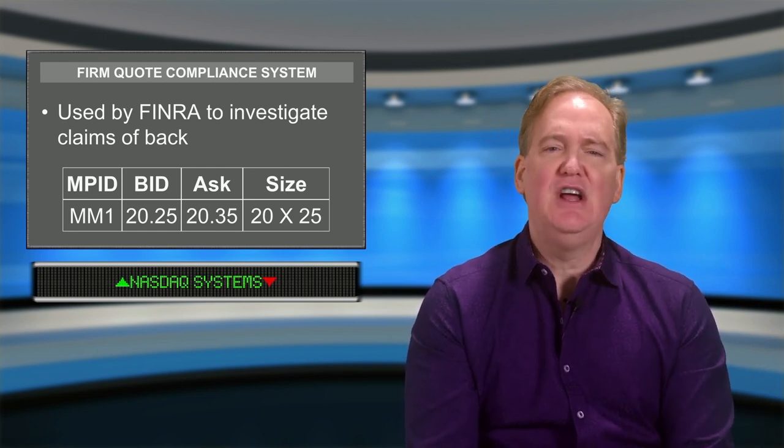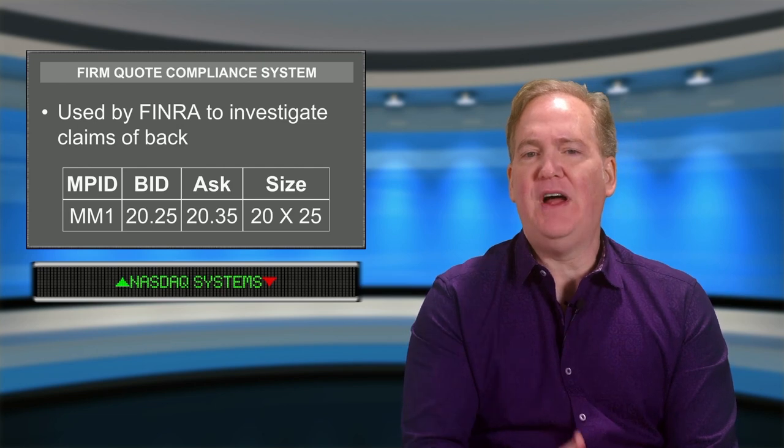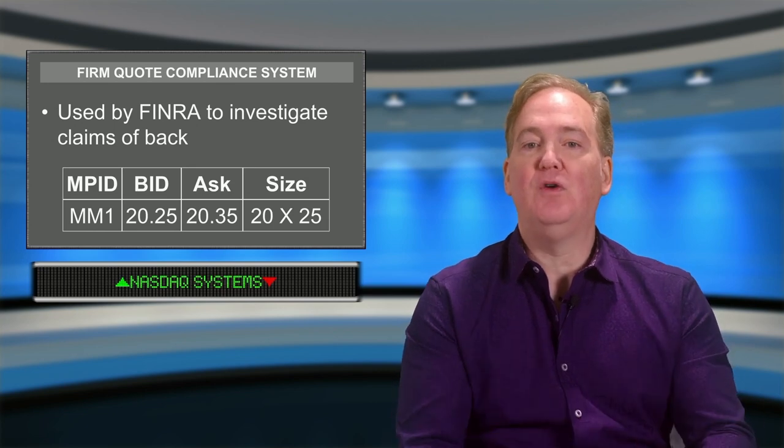Market maker one is looking to buy 2,000 shares at the bid of 20.25 and has 2,500 shares offered at 20.35. If a market maker is displaying prices, they must honor them. So if an order is routed to market maker one to buy 1,000 shares at 20.35 and market maker one fails to honor that quote — simply backs away, updates their quote to maybe 20.40 without filling the customer's order — then the market maker has backed away. The broker-dealer who presented the order could enter a complaint with FINRA or NASDAQ asking them to review the time sequence of the market maker's quotes.